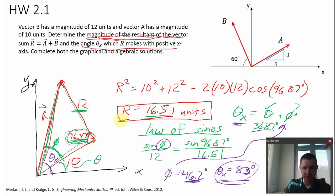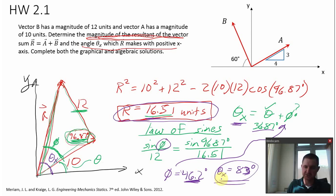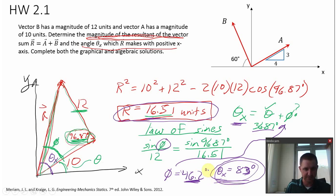So we found the magnitude of the resultant vector to be 16.51 units. Remember a vector has magnitude and direction, and we also found the direction — angle theta X is 83 degrees. That's the graphical solution. I'll have another video to show the algebraic solution of this problem.